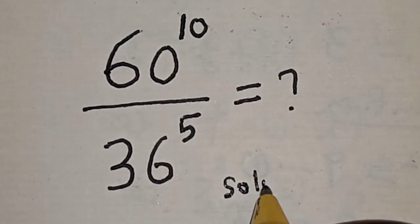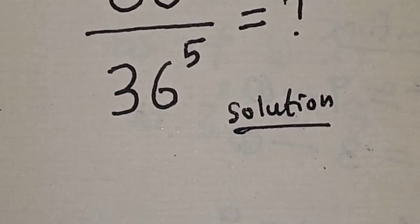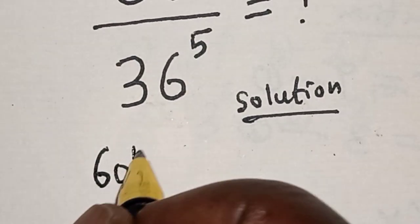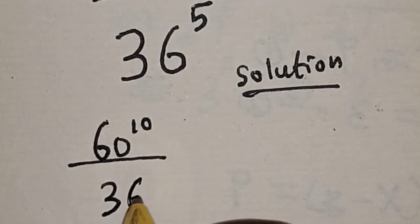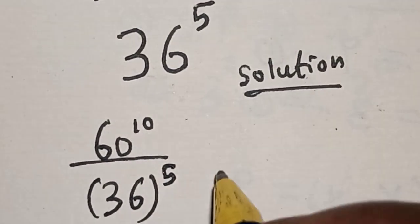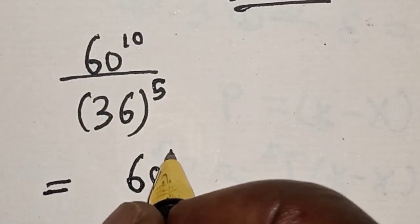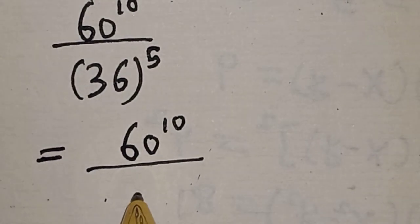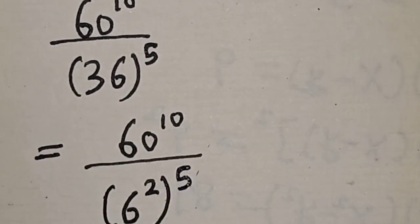We have the given question: 60 raised to power 10 divided by 36 raised to power 5. This is equal to 60 raised to power 10 divided by 36, which is 6 squared, raised to power 5.